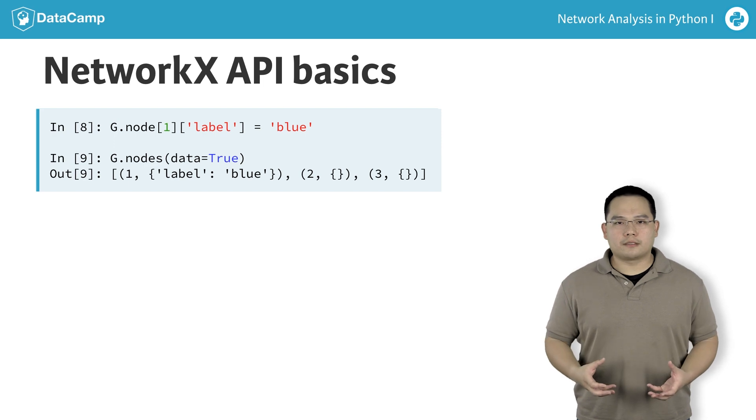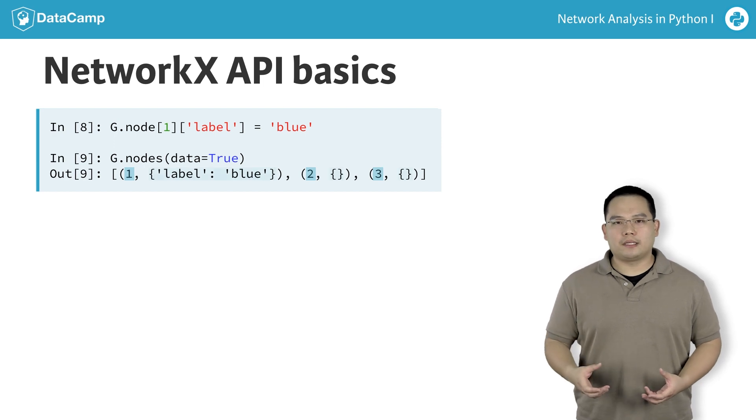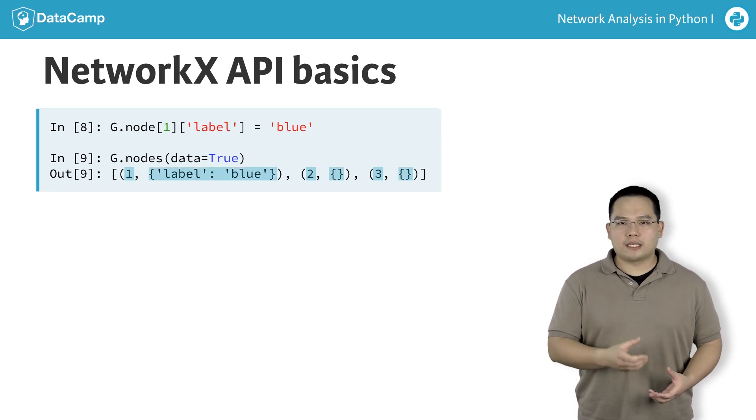What this returns is a list of two tuples in which the first element of each tuple is the node, and the second element is a dictionary in which the key value pairs correspond to my metadata.